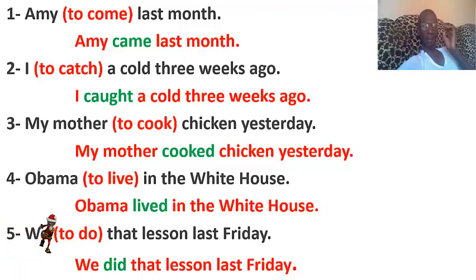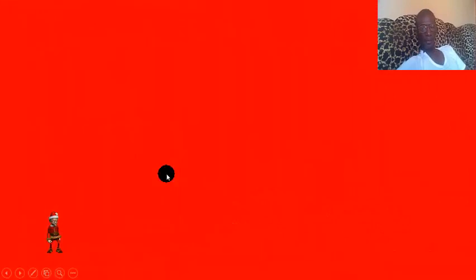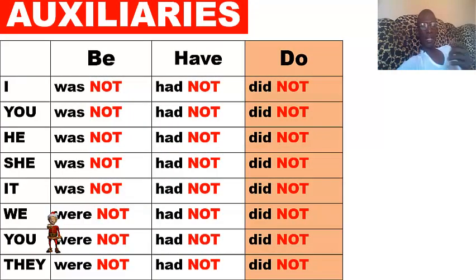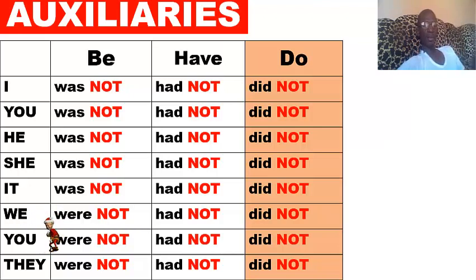Now let us move to the negative and interrogative forms. Nous avons déjà vu la forme affirmative. We have already dealt with affirmative form. Now we deal with negative form. For auxiliaries: to be → was not / were not, to have → had not, to do → did not. J'ai mis 'did' en rouge parce qu'on en a besoin pour conjuguer les verbes ordinaires.